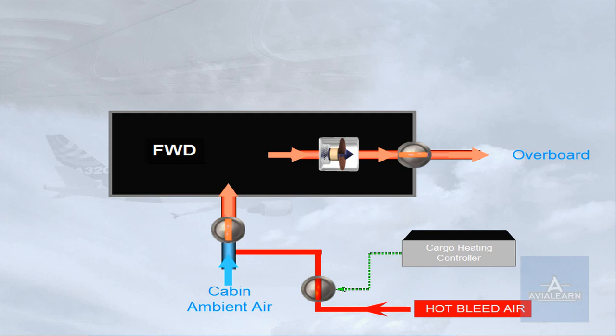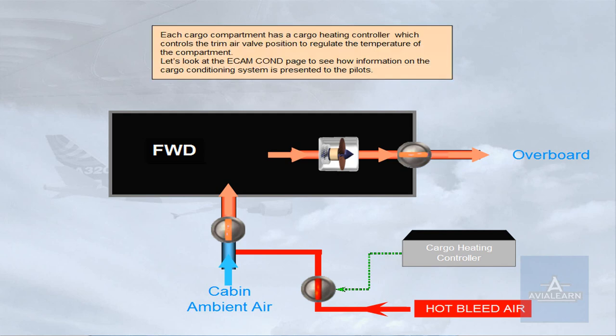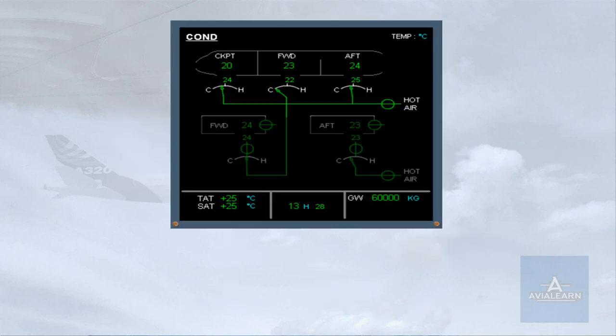Let's look at the ECAM conditioning page to see how information on the cargo conditioning system is presented to the pilots. The cargo heating system is an extension of the air conditioning system. Hot air is routed from the trim air system for the forward cargo hold, and via an independent hot air valve for the aft cargo hold.